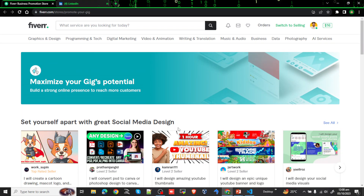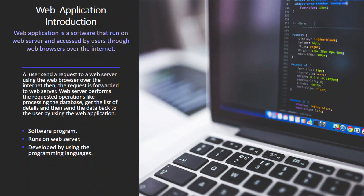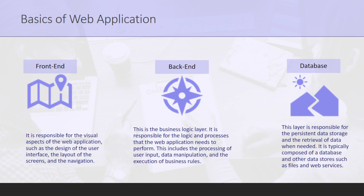Now we are going to discuss the different tiers of a web application. Web applications function with a front end, back end, and database. This three-tier structure is important because it helps to separate the different elements of a software application. By separating these components, the application can be designed to be more efficient and secure, and it makes it easier to maintain and update over time.